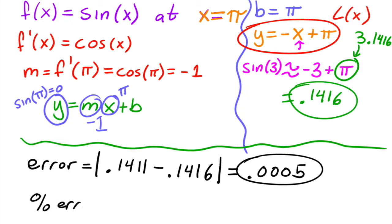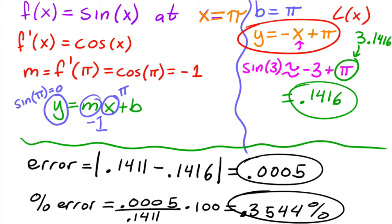And then the percent error is simply equal to that error, 0.0005, over the actual, which is 0.1411, times 100, giving us 0.35 percent, and that's it.